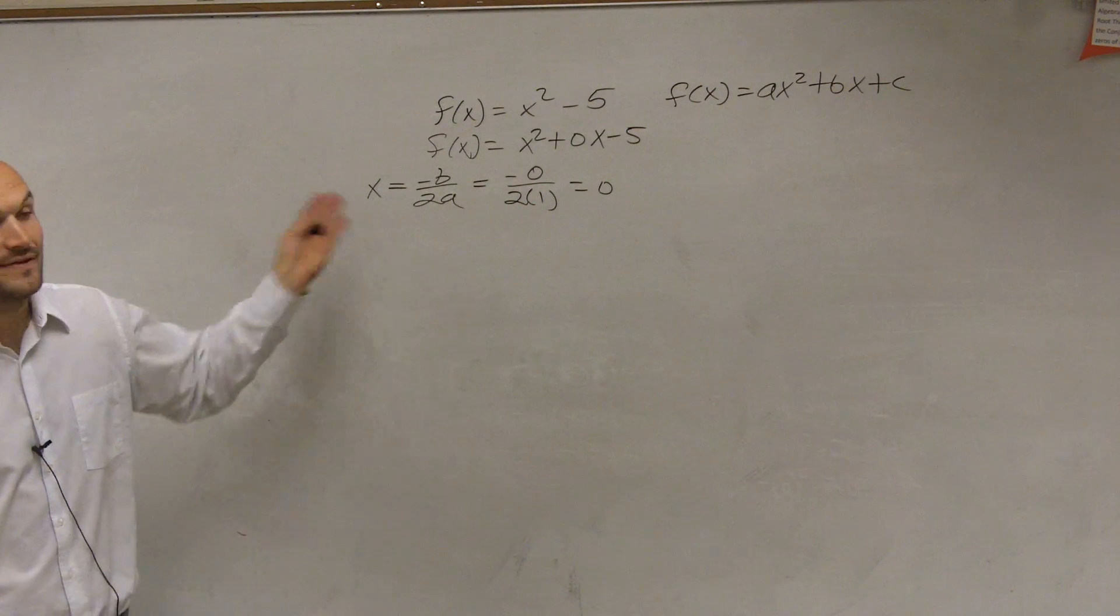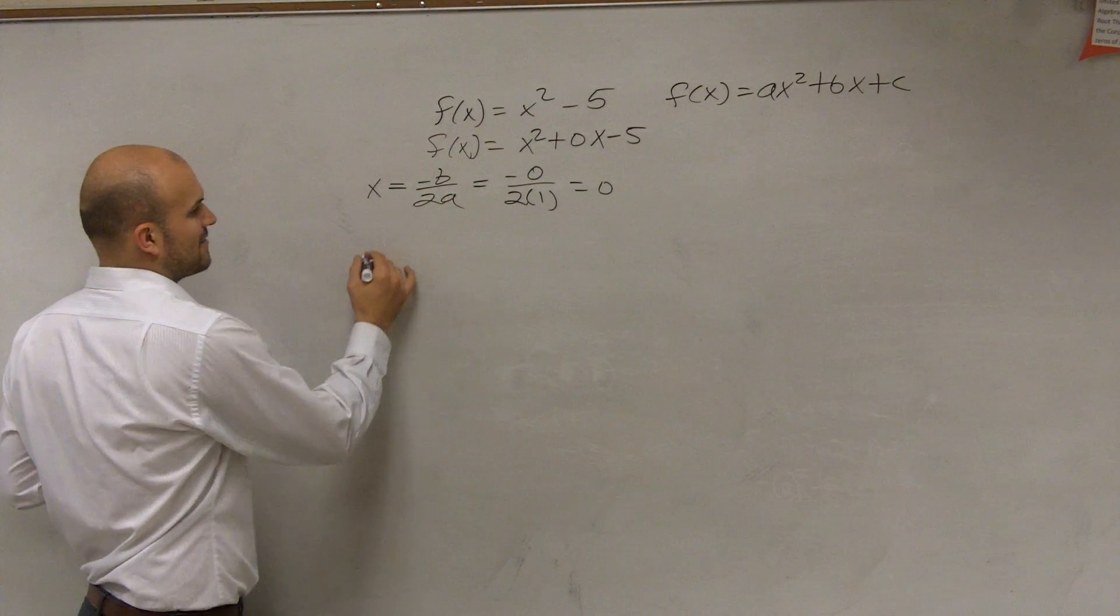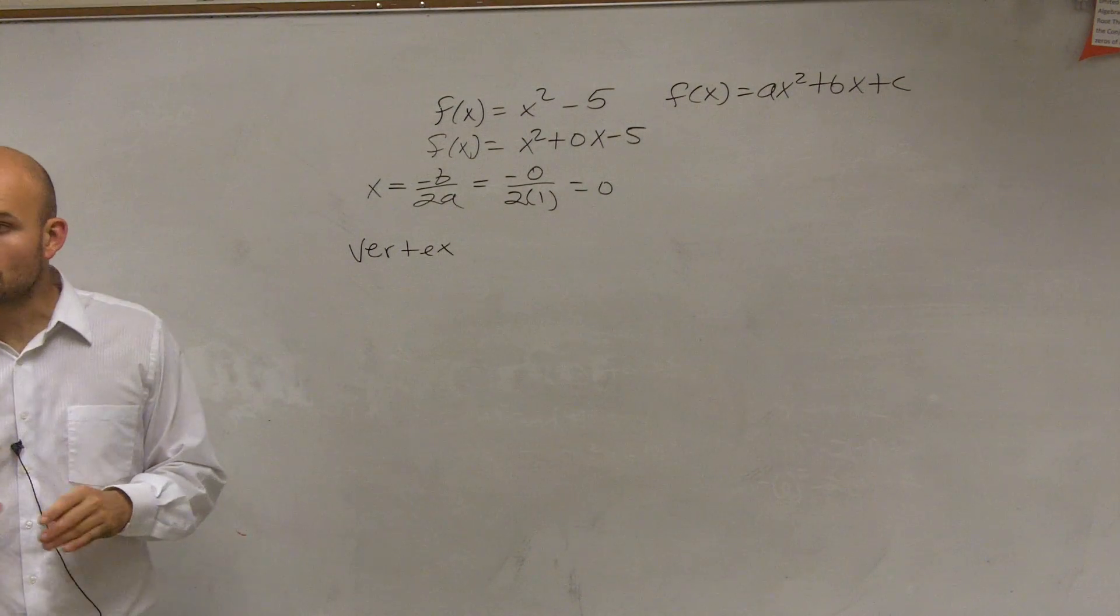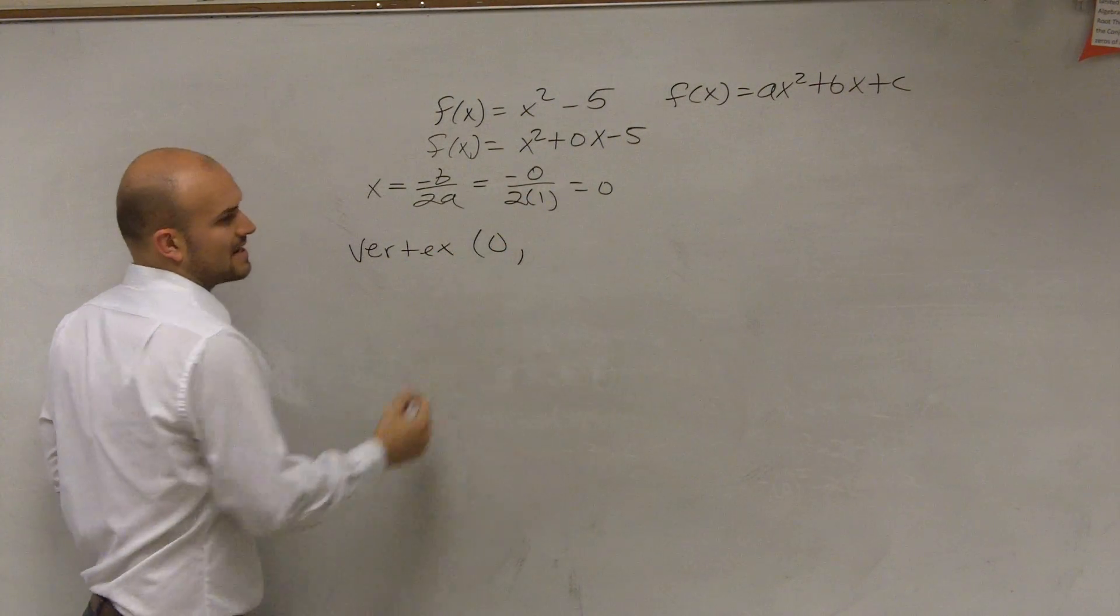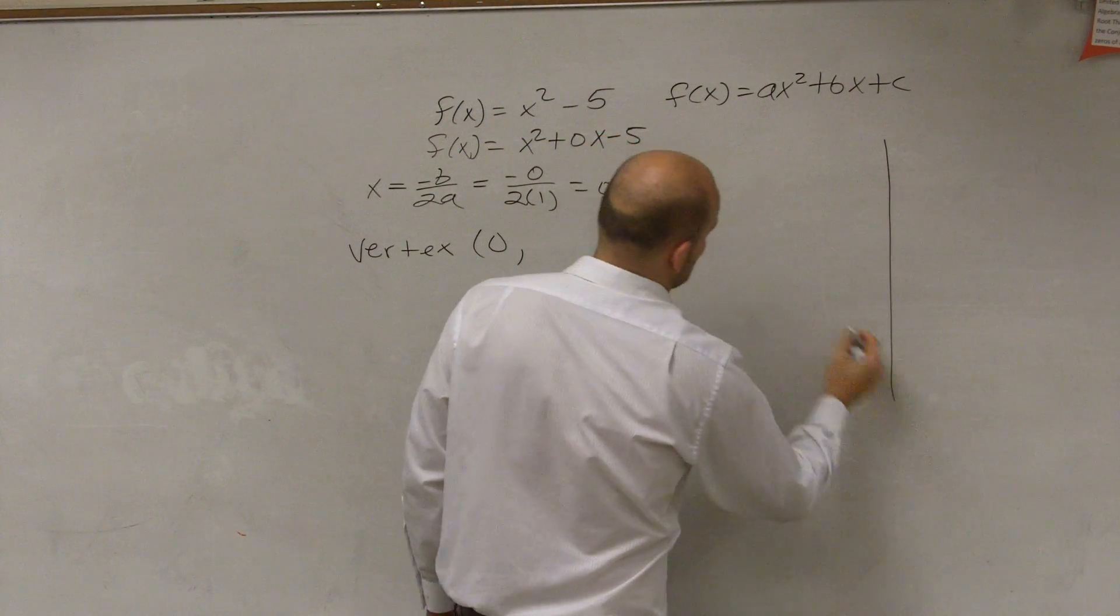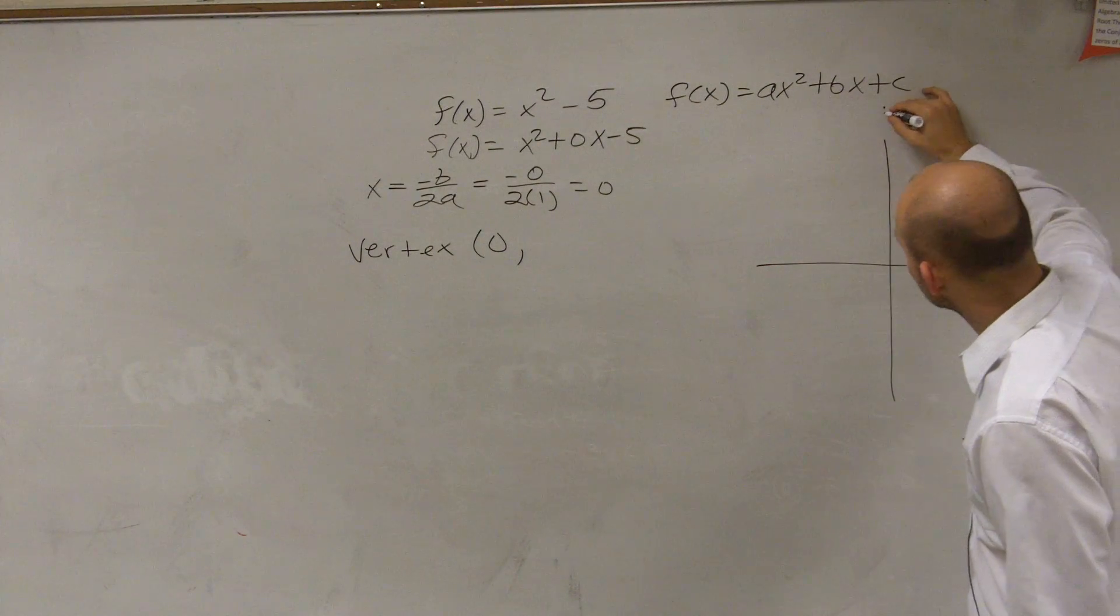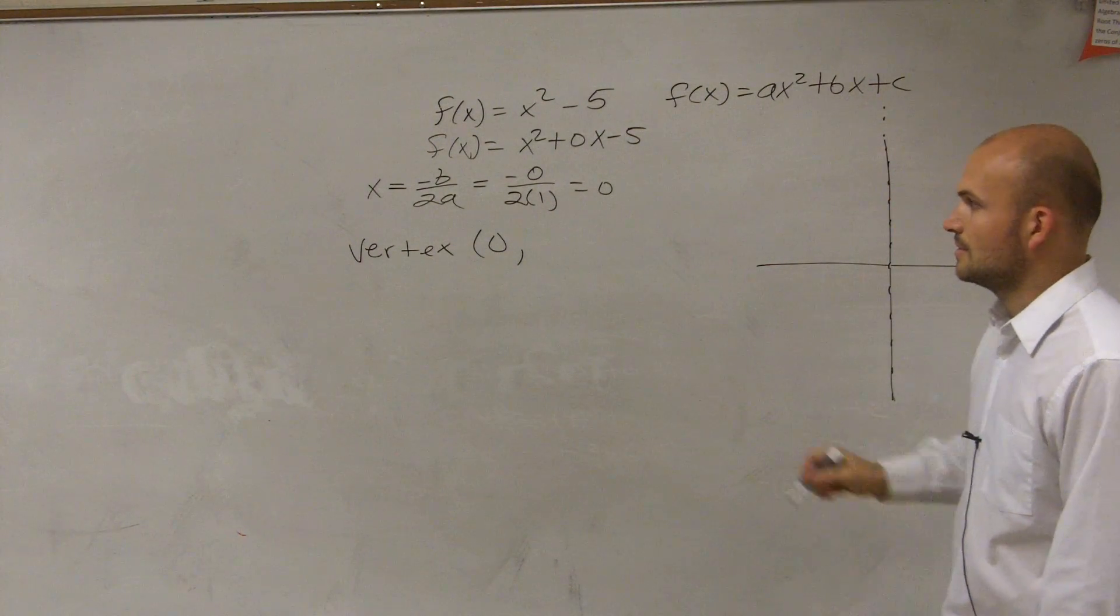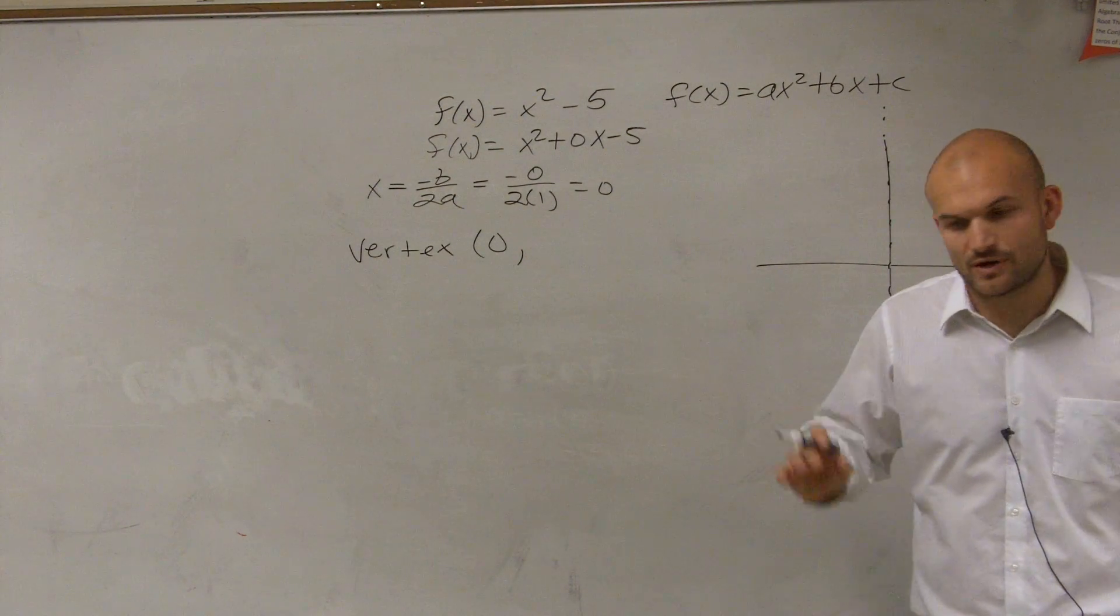So therefore, if the axis of symmetry is equal to 0, then I also know that my vertex, because remember the axis of symmetry goes through the vertex, therefore my vertex has an x value of 0. So let's go ahead and plot what this graph is going to start to look like. So I have an axis of symmetry at 0. Part of my vertex is 0, but I don't know what the y-coordinate is.